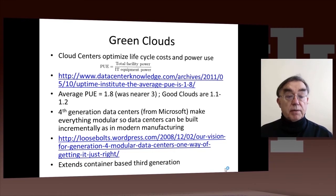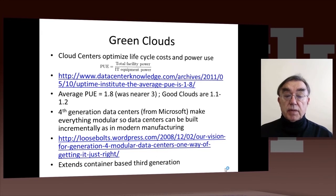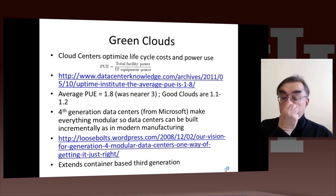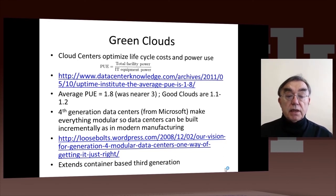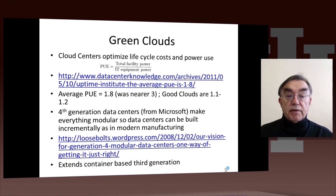Clouds are revolutionizing data center technology. One of their revolutions is to make those data centers much cheaper to run by being more efficient about the use of power. Another important issue is modularity. In the fourth generation data centers, everything is made modular — not just the container-based approach, but all the network interconnects as well. When you want to expand, you can upgrade your cloud center in a very simple, linear fashion proportional to the number of computers you want.